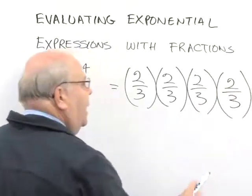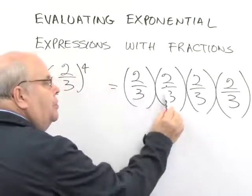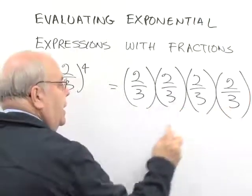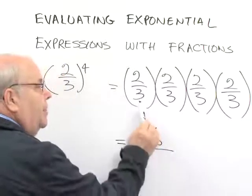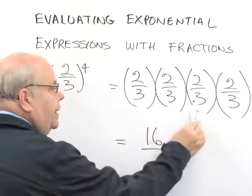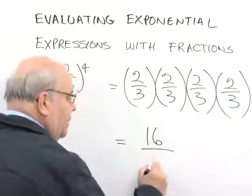We're going to actually multiply out two times two is four times two is eight times two is sixteen. So in the numerator, we have sixteen. In the denominator, three times three is nine times three is twenty-seven times three is eighty-one.